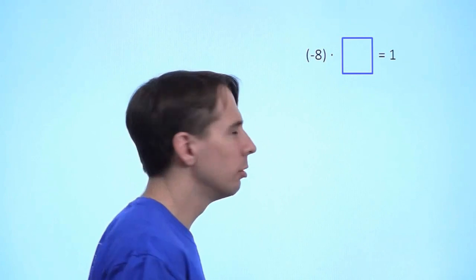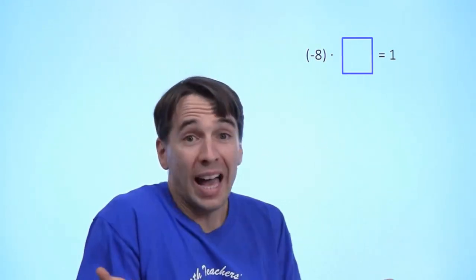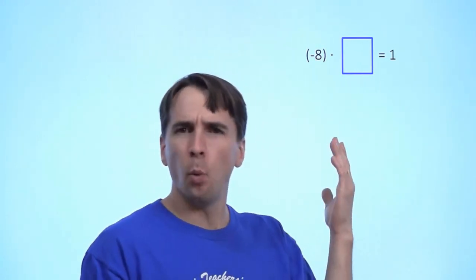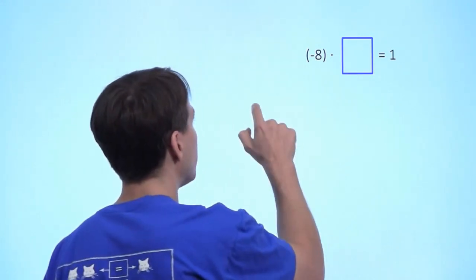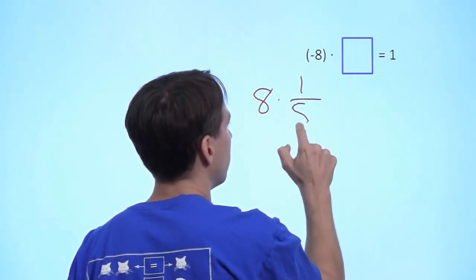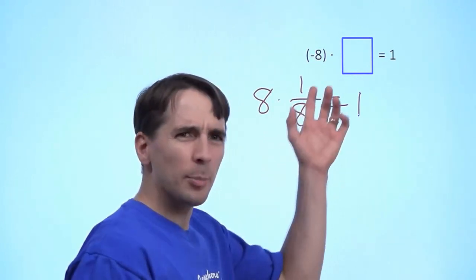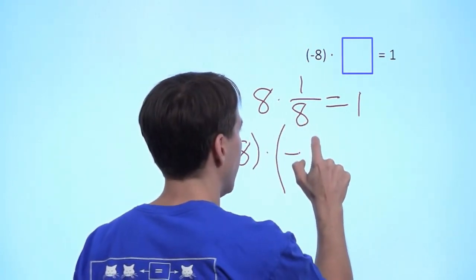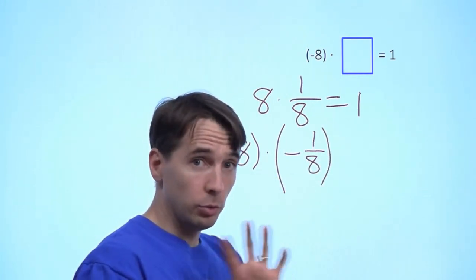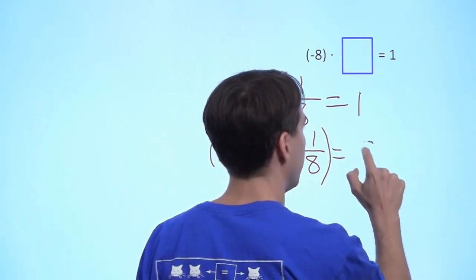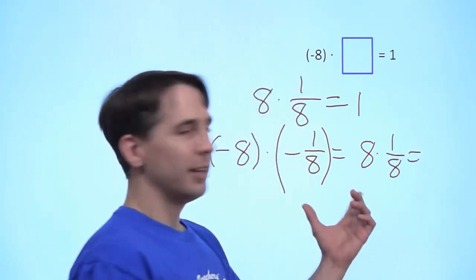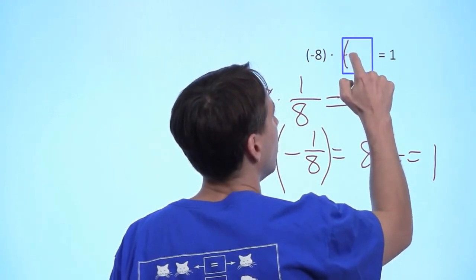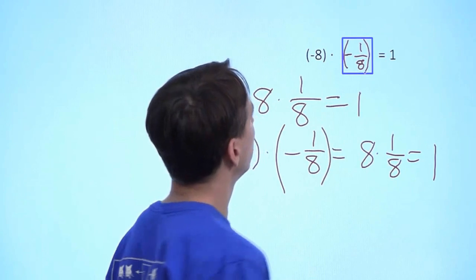How about negative numbers? What's the reciprocal of negative 8? The reciprocal has to be negative, because if I multiply a negative by a positive I get a negative — not 1. So the reciprocal will be negative. If this were a positive number, the reciprocal of 8 is just 1 over 8. So let's see what happens if I multiply negative 8 by the negative of 1 over 8. Multiplying two negative numbers gives the same result as multiplying their positives: 8 times 1 over 8 is 1. So negative 8 times negative 1 over 8 is 1. The reciprocal of negative 8 is negative 1 over 8.